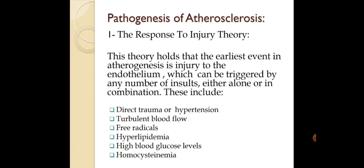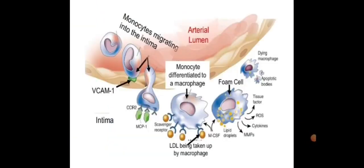Homocysteine, which results from inherited metabolic defects that lead to very high levels of homocysteine, is also a trigger. The endothelial cells transport substances from the blood to body cells via transcytosis. When endothelial cells of the arterial wall become damaged, this increases the permeability of the arterial wall, allowing low-density lipoprotein to enter the endothelial layer.